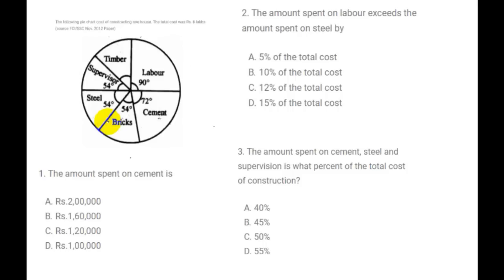So here we are starting with the pie chart. Here is the pie chart with 6 lakhs as the total amount. We have to mention different items and the percentage of different categories. First, we need to understand the data.